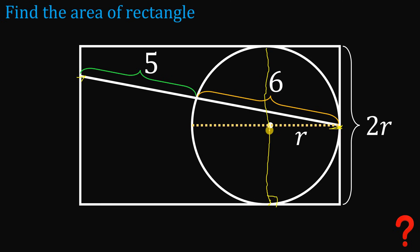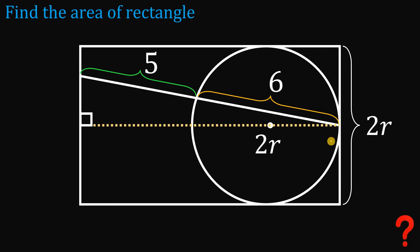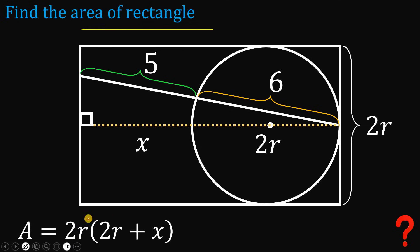Now let's extend this diameter to the other side of the rectangle. This creates a right angle, forming a right triangle. This side is also the radius r, and the diameter equals 2r. To find the base of the rectangle, call this segment x, so the base equals x plus 2r. The area of the rectangle is therefore base times height: 2r multiplied by (x plus 2r).